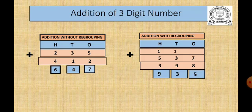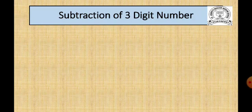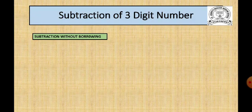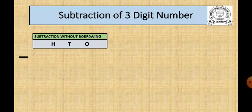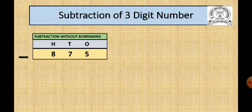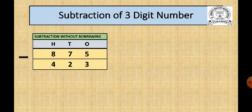Now we will go to the next type, that is subtraction of a three-digit number. In subtraction of a three-digit number, we also do two types today: subtraction without borrowing and subtraction with borrowing. Let's first begin with subtraction without borrowing. We place the place orders — hundreds, tens, and ones — then put the minus symbol. Always in subtraction, the first number is the bigger number, and we subtract the smaller number from it. Here the problem is 875 minus 423. Subtraction also begins with the ones place. In the ones place we have 5 and 3. 5 minus 3 is equal to 2.